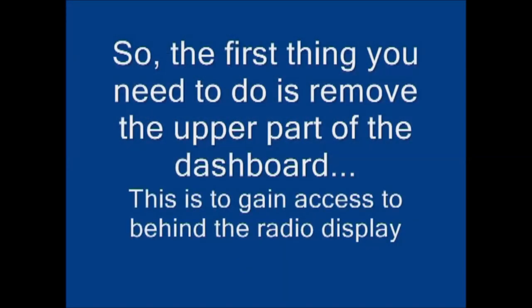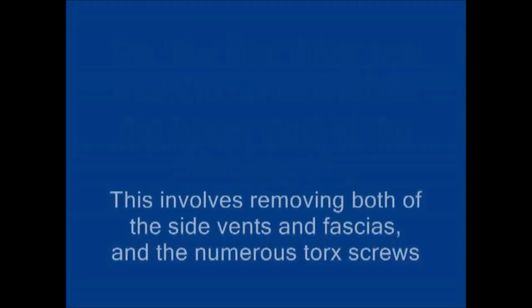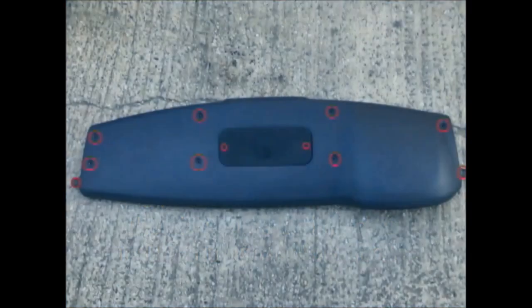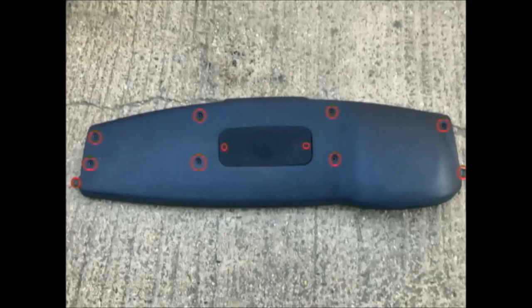So the first thing to do is remove the upper part of the dashboard to gain access behind the radio display. This involves removing both side vents and the fascias and numerous torx screws. You can see there I've circled the top dashboard torx screws, there's loads of videos online to demonstrate this.